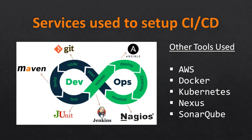These are the services we are going to use across this web series. We are going to build Java code — we won't write it, we'll take it from the developers and push it into Git. We will build using Maven and Jenkins, run JUnit test cases, and release through Jenkins. We use Ansible as a deployment tool, deploy into AWS, and we are going to introduce containerization with Docker and Kubernetes. Then Nexus as an artifacts repository, SonarQube to monitor your code, and Nagios to monitor your infrastructure.